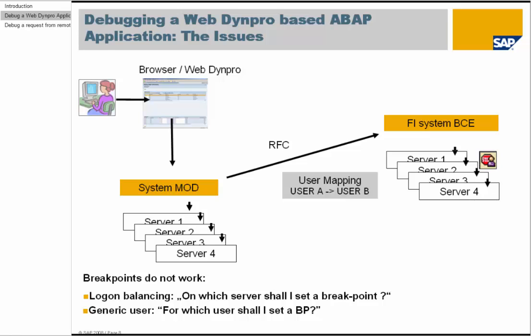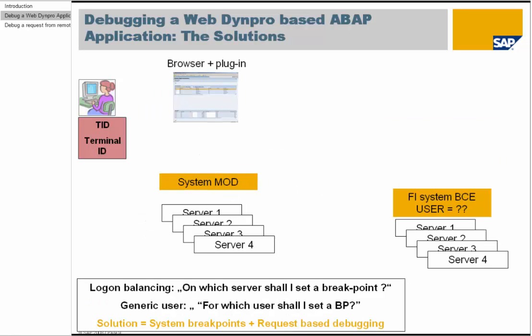The second reason is user mapping. For example, we start with user A in the MOD system, and a mapping to another user is then executed in the RFC. It could also be a generic user, such as a job that maps requests to a user. If the breakpoint is set for such a user, then every client of this job would wait in the debugger. The solution is request-based debugging: the breakpoint is set, the request is sent, and then it stops.